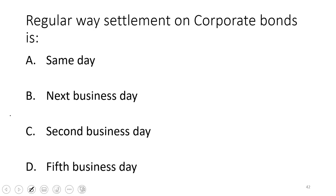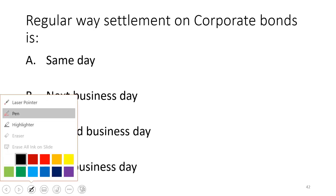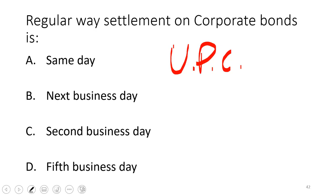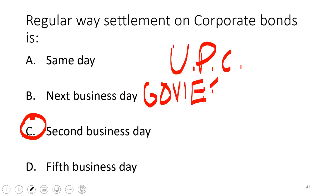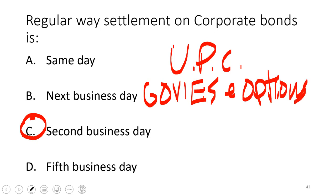Regular way settlement on corporate bonds is T plus two. Same-day settlement is cash settlement — irregular but popular on December 31st for tax purposes. Government securities and options settle T plus one. The Uniform Practice Code standardizes secondary trading so that ownership changes hands consistently. The answer is C, T plus two.